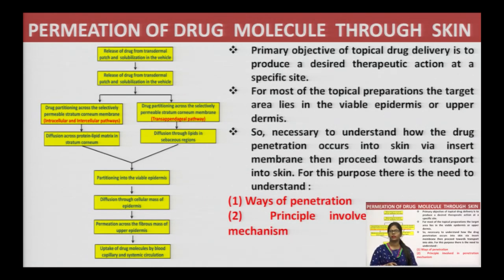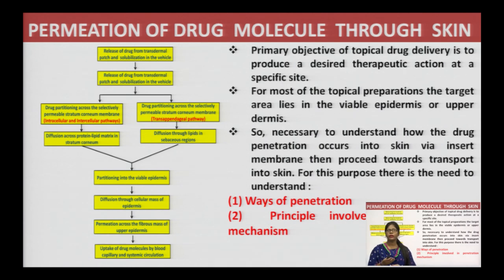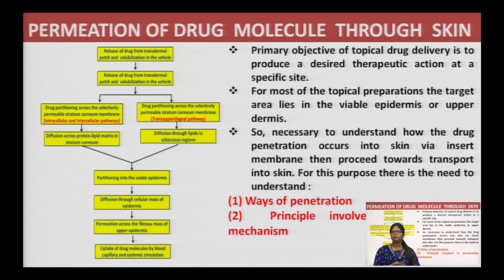How does drug permeation through the skin surface occur? The permeation happens in 5 steps. First, the drug is released from the delivery system (vehicle). Then, according to its chemical nature, it chooses its pathway — either intracellular, intercellular, or trans-appendageal pathway. Further, the drug undergoes partitioning, then diffusion, then permeation into other layers. Lastly, blood circulation vessels take the drug into systemic circulation. There are mainly two pathways for drug permeation.